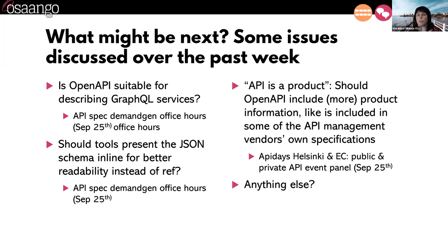The core point of API as a product: OpenAPI 3.x already supports more of that productization layer. This was actually discussed last week at the European Commission API Days event — should OpenAPI include more product information? Some API management vendors have a plan or product layer as a YAML or JSON file on top of the actual OpenAPI specification, describing plans, rate limits, and things like that for various users.